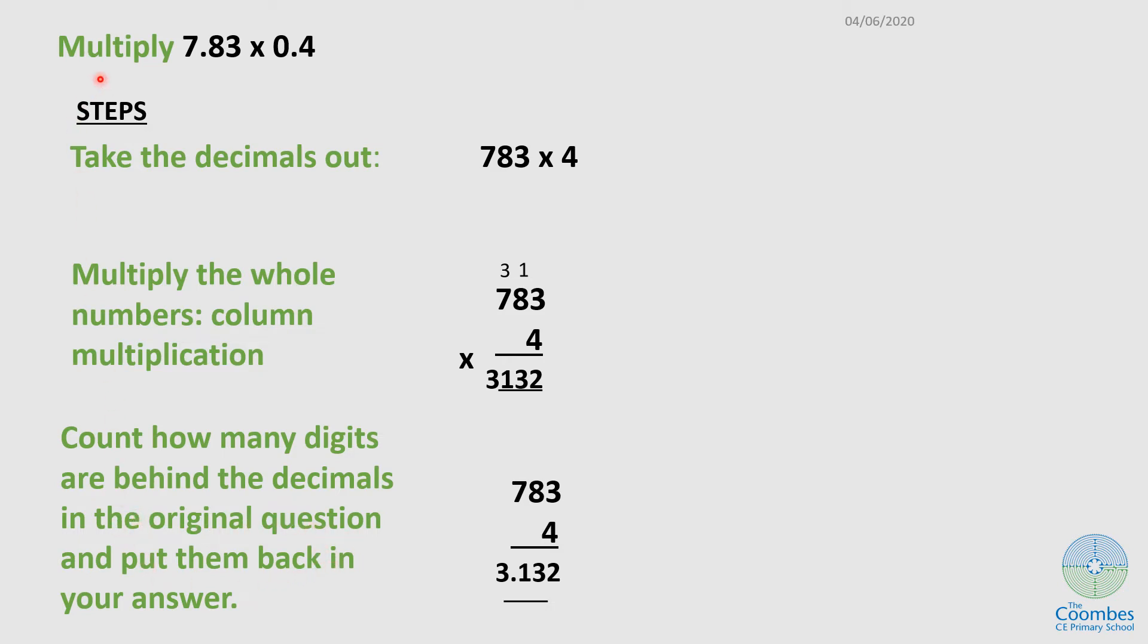Let's go back to the original question and see how many digits are behind the decimal. In my first one I have 1, 2, and then 3. So I'm going to put back 3 decimal places in my answer. I'll start them from here, that'll be 1, 2, and 3. So my answer is actually 3.132.